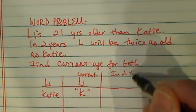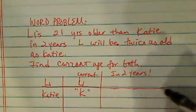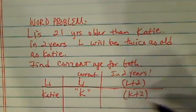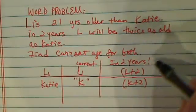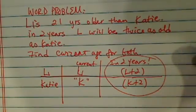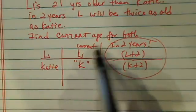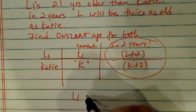Now in two years, this is the important part. L is going to be L plus 2 and K is going to be K plus 2. So in two years, this is the place where most students mess up a little bit. So if you have this little table, it's a lot easier to go through the equation.